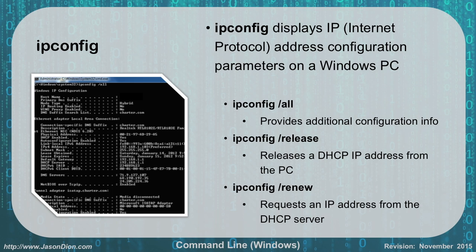IPConfig stands for IP Configuration and displays the Internet Protocol address configuration on your Windows PC. Running ipconfig /all gives you all the information for every single interface you have. In this example, there's one local area network connection and another connection which is actually a VPN connection. If you have multiple interfaces — like a wired and a wireless connection — they'll all show up with their respective information.